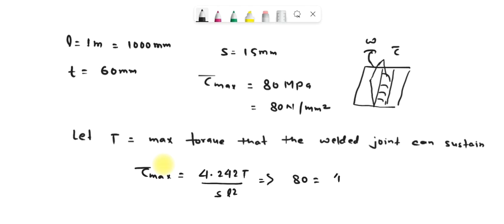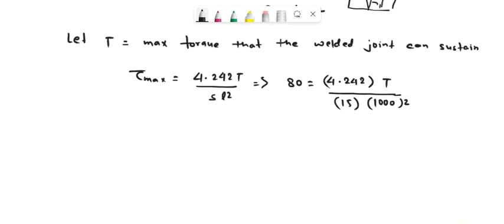So 80 equals 4.242 T divided by 15 times 1000 squared. On solving, we get this equals 0.283 T divided by 10 raised to the power 6.